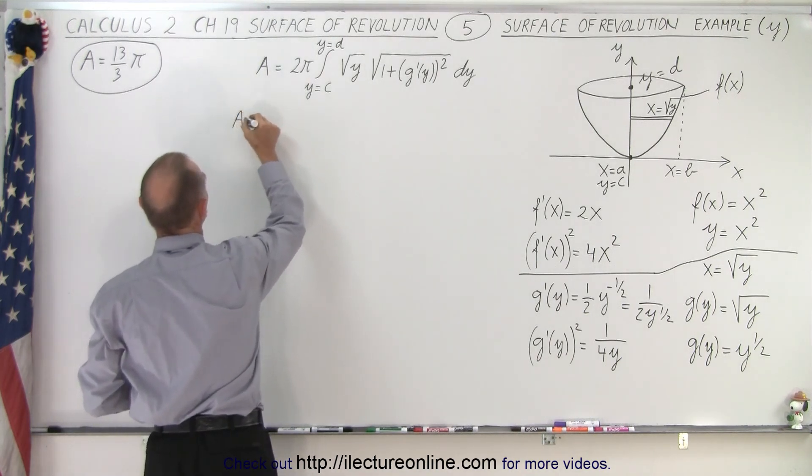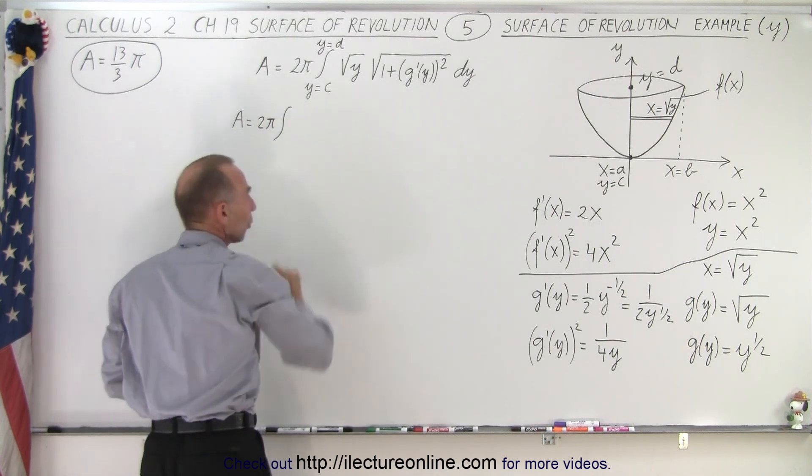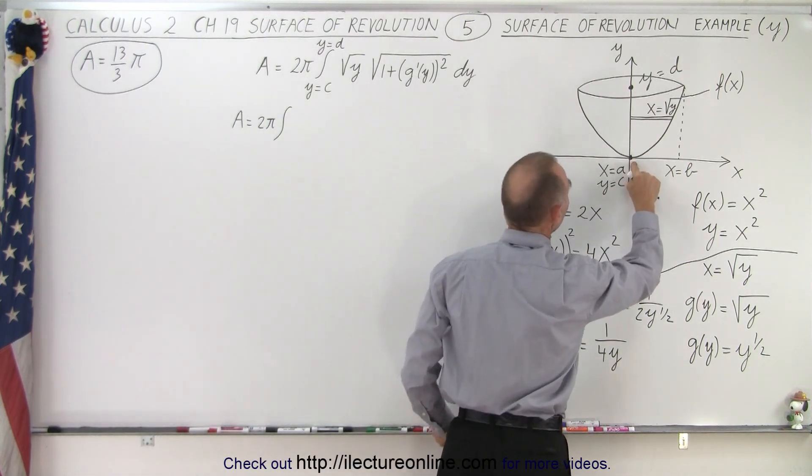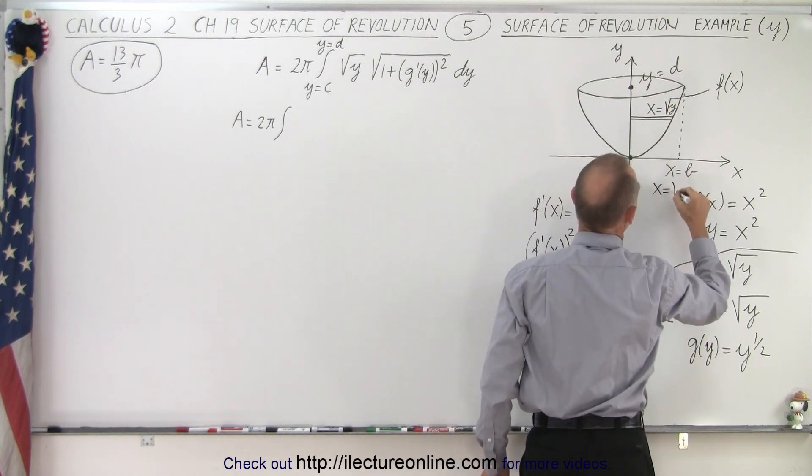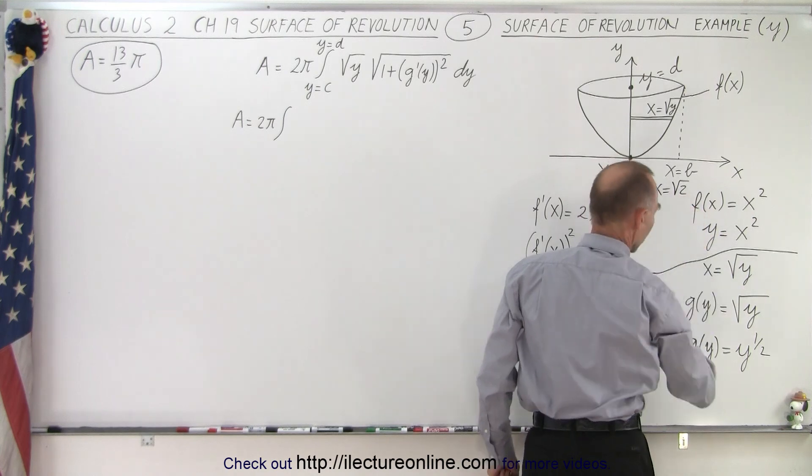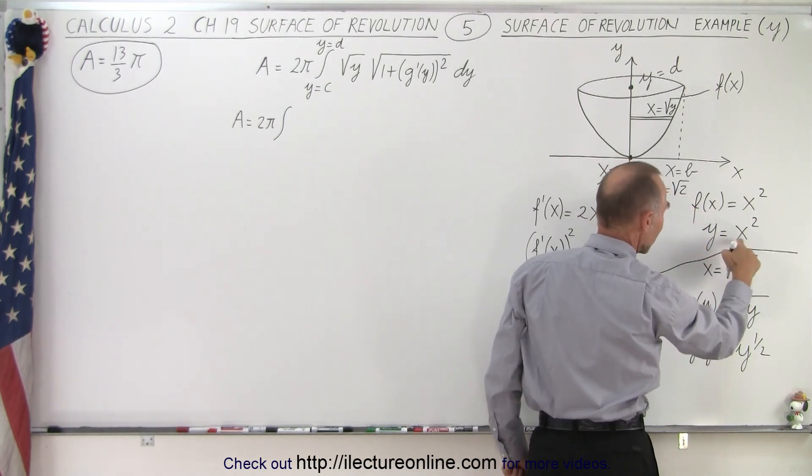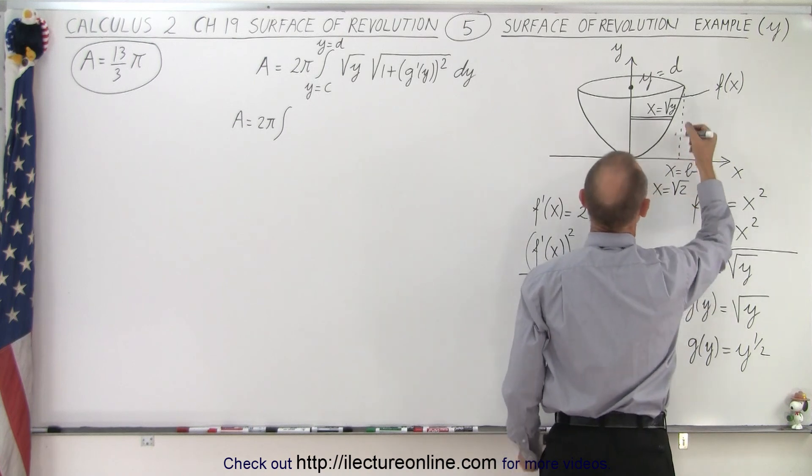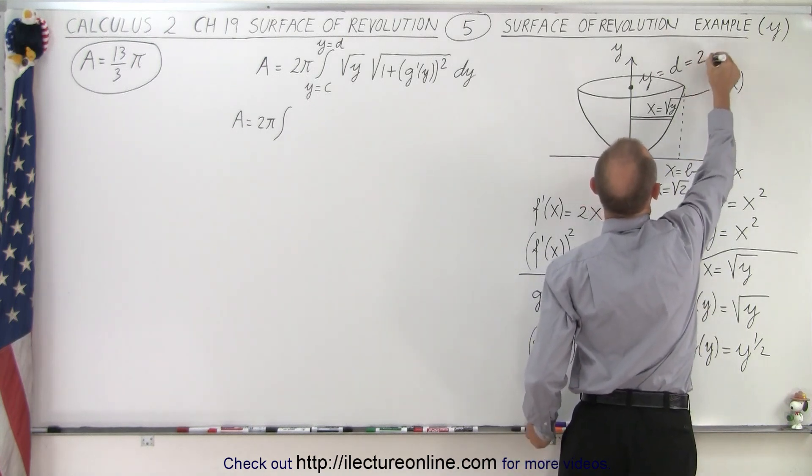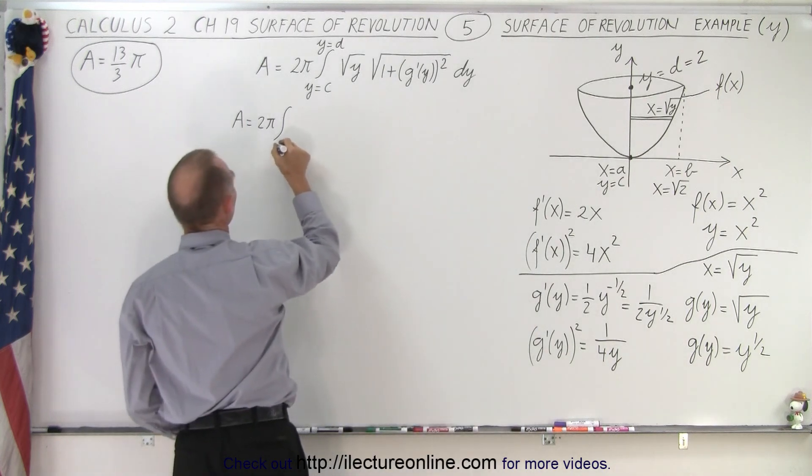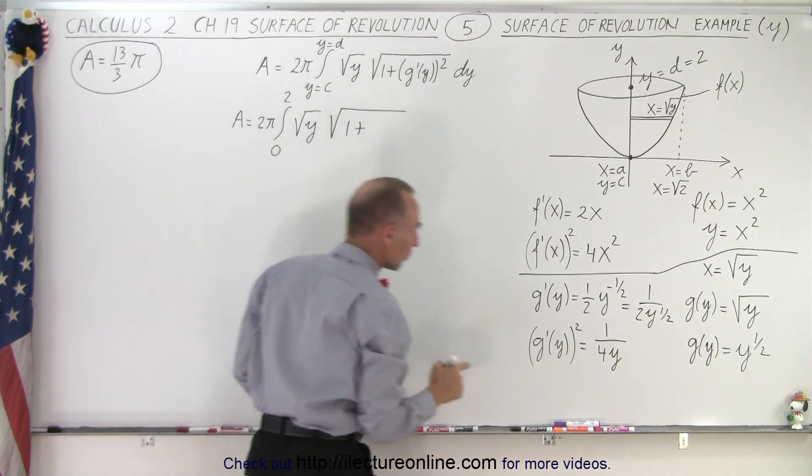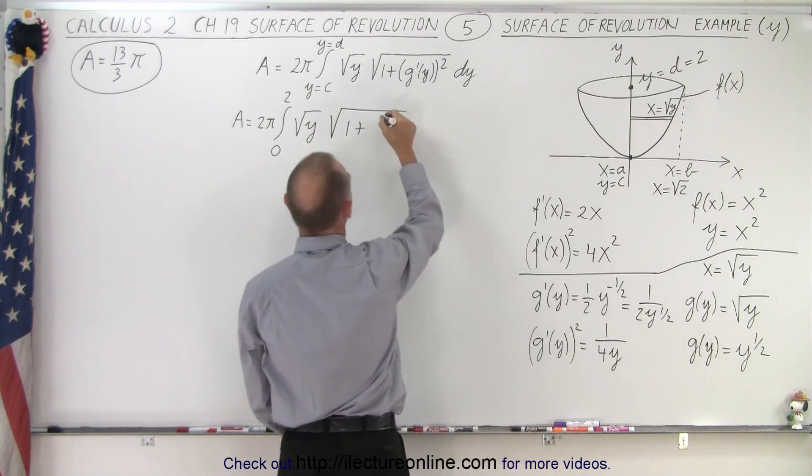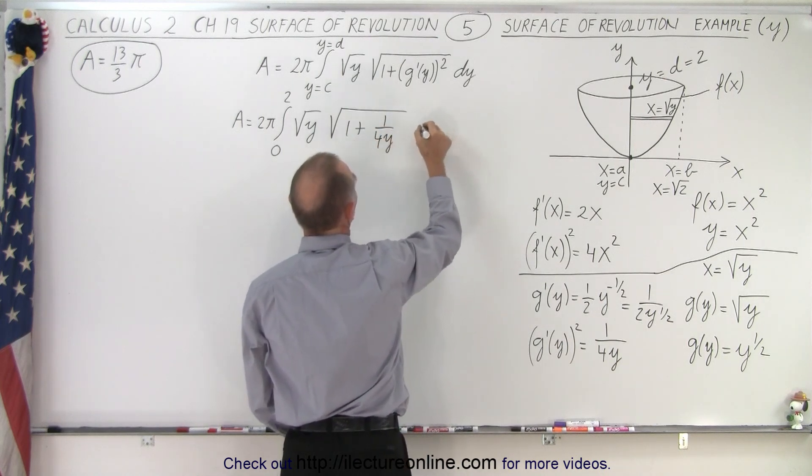Alright, let's plug everything in. We have area equals 2 pi times the integral, now these are y limits, so y starts at 0 and goes all the way up to the top. Now if x equals the square root of 2, then y is going to be x squared, so the square root of 2 squared is 2, so in this case the limit is 2. We integrate from y equals 0 to y equals 2 times the square root of y times the square root of 1 plus g prime of y squared, which is 1 over 4y, times dy.